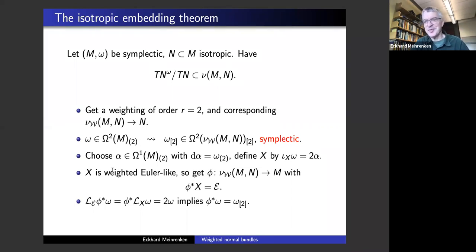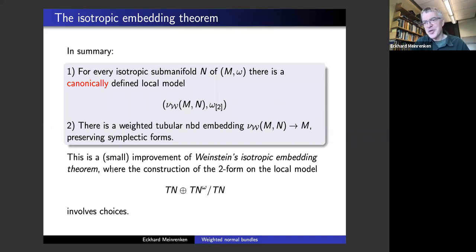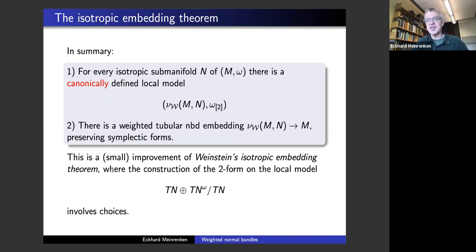Let me summarize what we've gotten as an outcome. The bottom line is: for every isotropic sub-manifold, there's a completely canonically defined local model, which is this weighted normal bundle with a symplectic form. The weighted normal bundle is not a vector bundle, but it's some fiber bundle. And there always exists — after some choice given by the one-form alpha — a weighted tubular neighborhood embedding which identifies the symplectic form on your ambient manifold M with this model symplectic form. This is a small improvement to the original Weinstein isotropic embedding theorem, where you also have a local model but the two-form on that local model depends on choices: you have to choose a particular connection. Here, our local model is completely canonical.